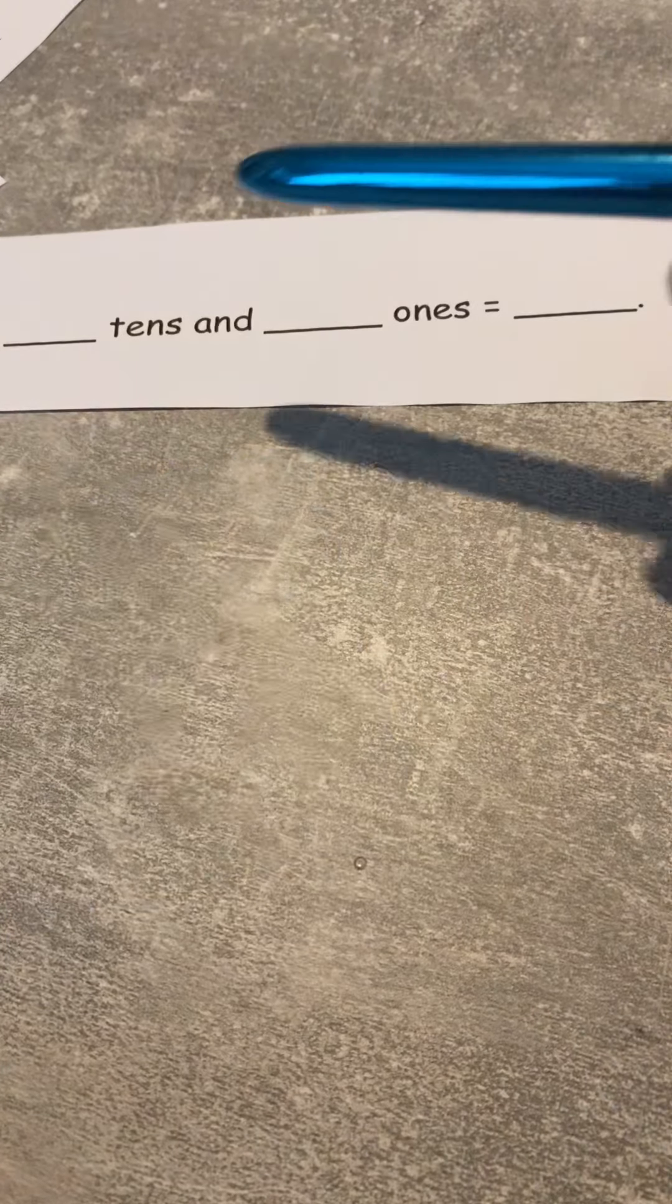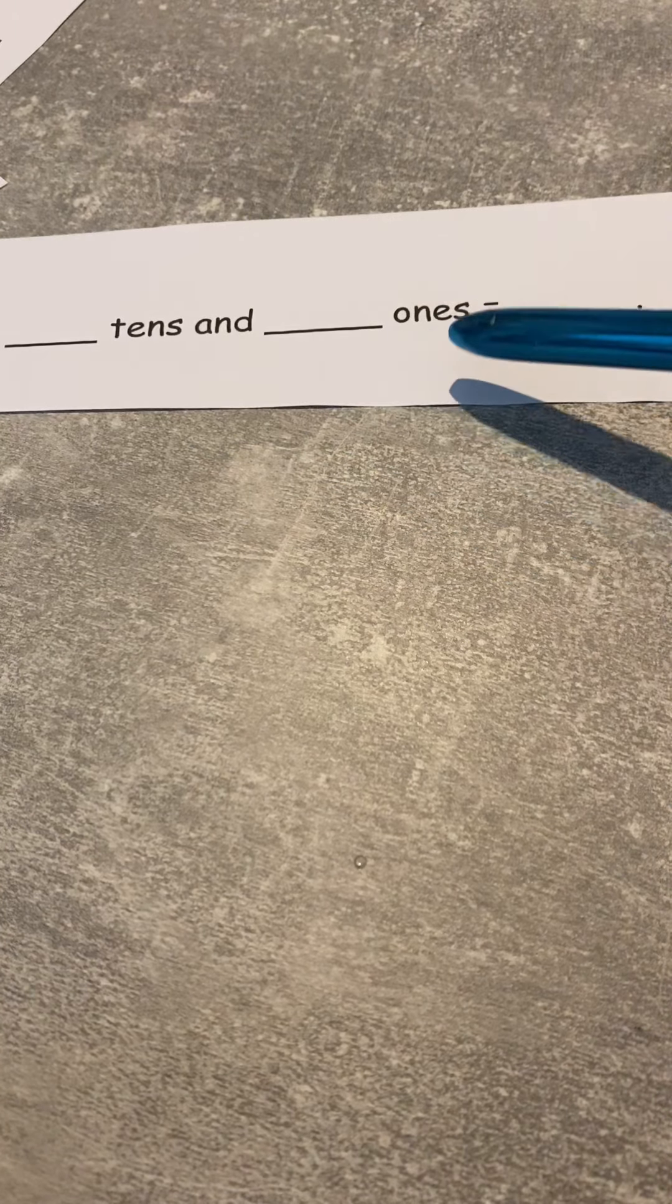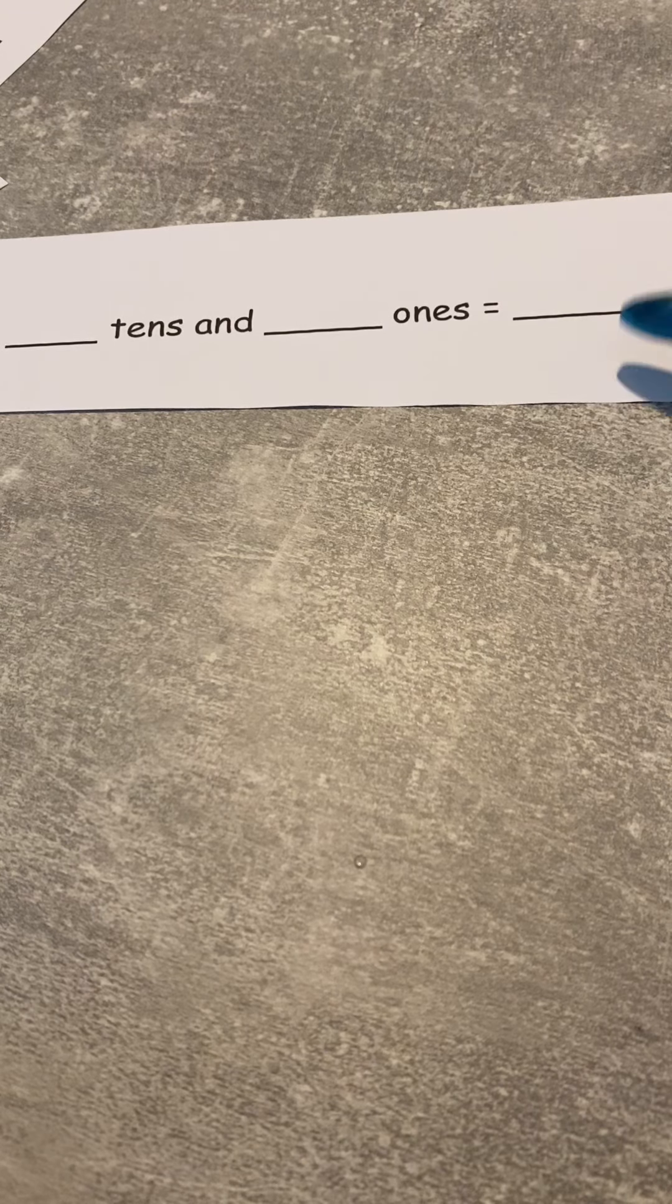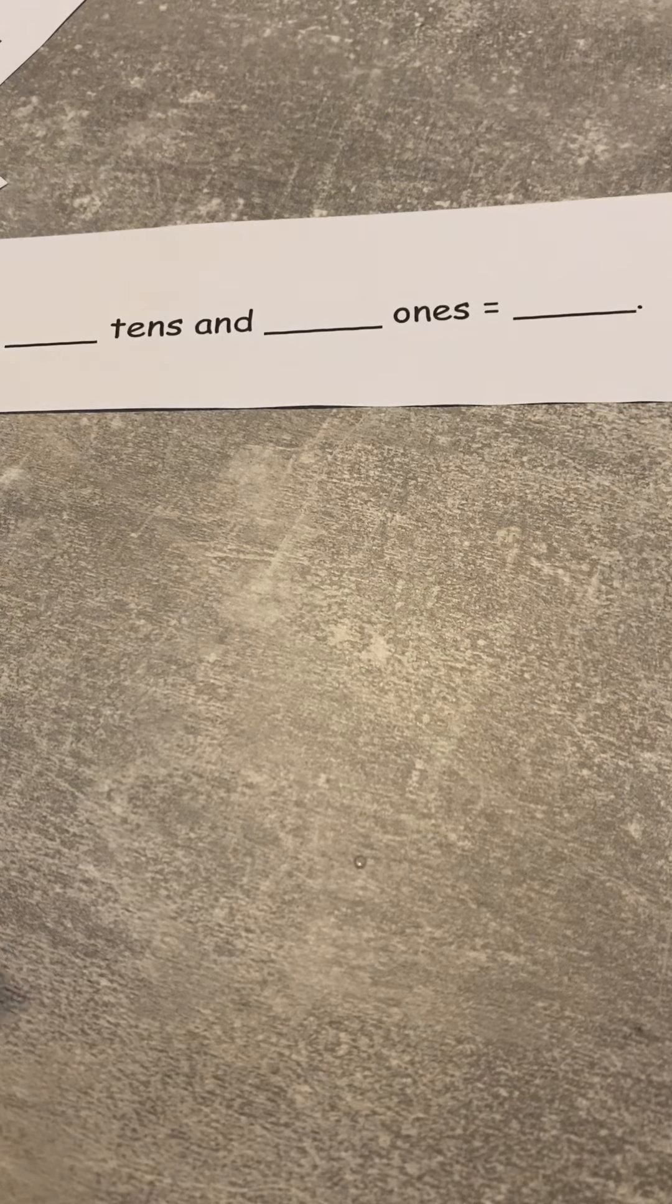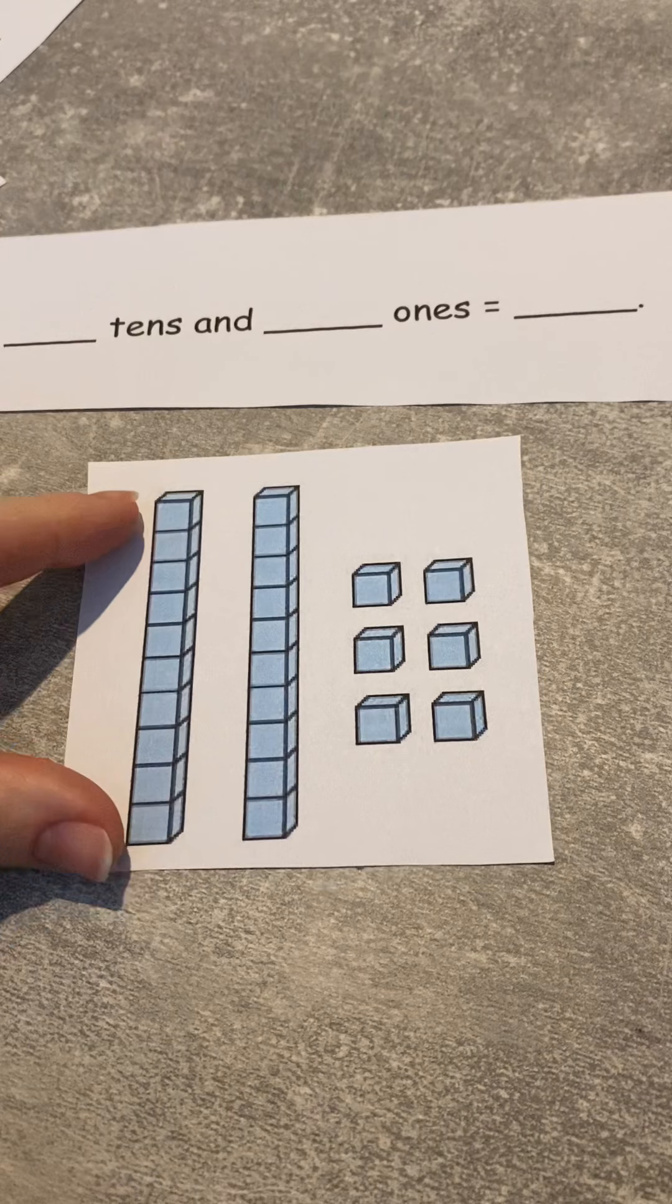So what we're going to do today is very similar to what your activity is, so it's just a bit of a starter. So here we go. We've got a question and it says blank tens and blank ones equals blank. So this is going to help us build our number. So what I've got here is some base 10 pieces.